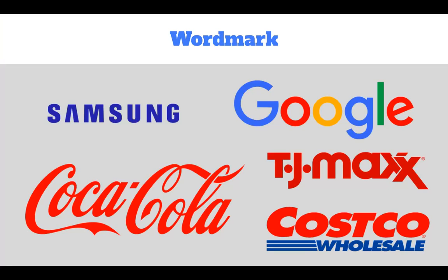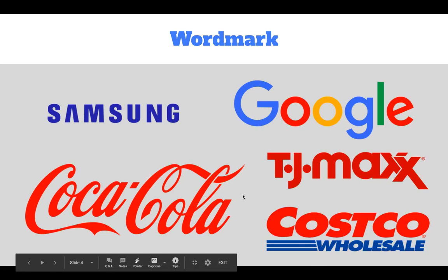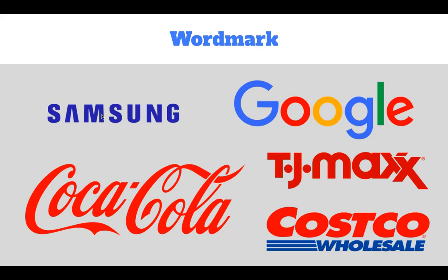There are four different types of logos. The first type is a wordmark, which simply means the name of the organization or company written out in a different font. Some use elaborate fonts like the Coca-Cola logo, some use sans serif fonts like Google, and some use display fonts — which can be serif or sans serif with unique characteristics — such as Samsung's logo.